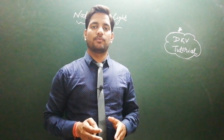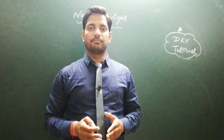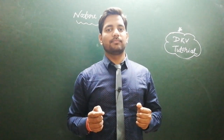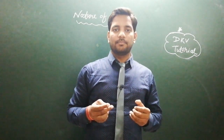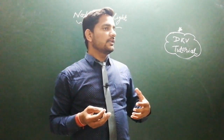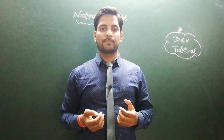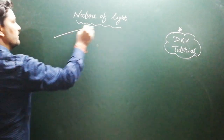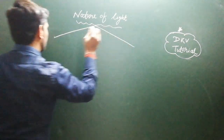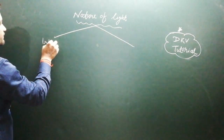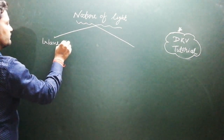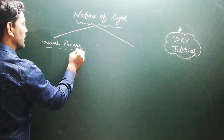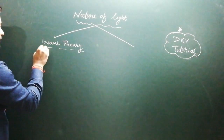The nature of light — some say it is made up of particles, others say it is made up of waves. To understand this, we look at two theories of light. The first is the Wave Theory. According to wave theory, light is made of electromagnetic waves.